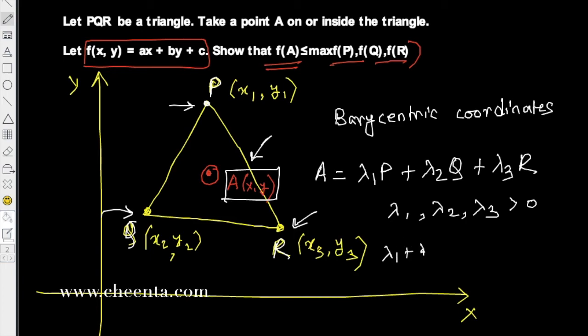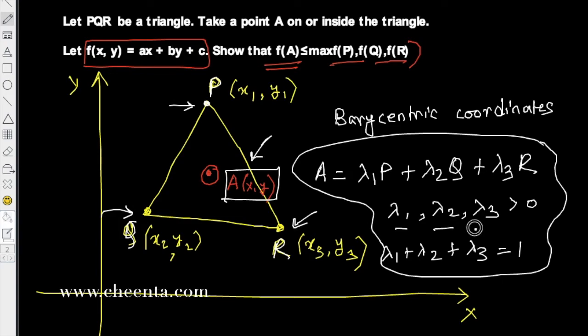And their sum will be equal to 1. So this is something that you have to show, this is something that requires a little bit of proof. But if we can show this, then this problem can be solved quite simply. By the way, these numbers λ1, λ2, and λ3 are often called the barycentric coordinates of this particular point A with respect to this triangle PQR.